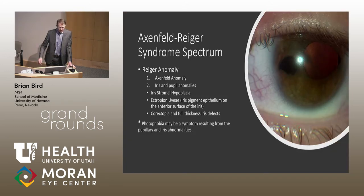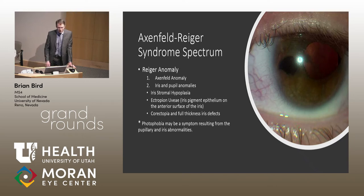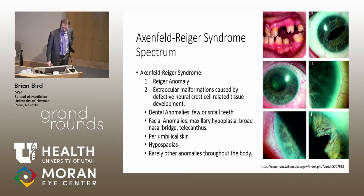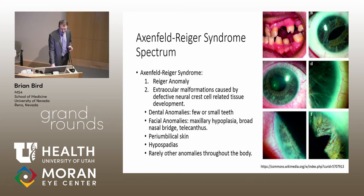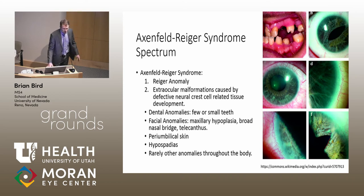Moving up in severity: Axenfeld anomaly plus iris and pupil anomalies is called Rieger anomaly. Because of these iris and pupil defects, patients may begin complaining of photophobia and glare. The most severe end of the spectrum is full-blown Axenfeld-Rieger syndrome — that's Rieger anomaly plus extraocular malformations. Keep in mind these mutations occur in neural crest cell-related genes, which are often transcription factors with large downstream effects seen throughout the body wherever neural crest cells are involved.